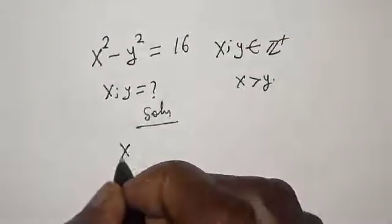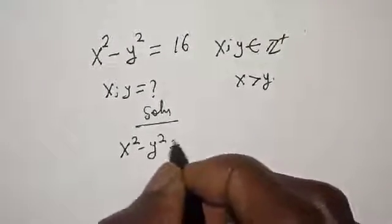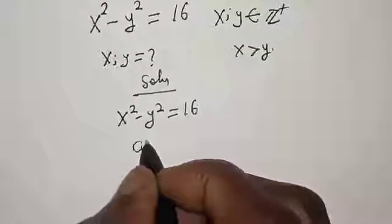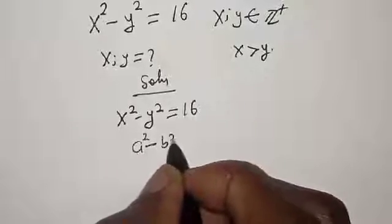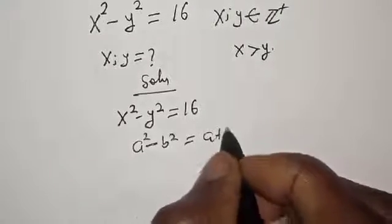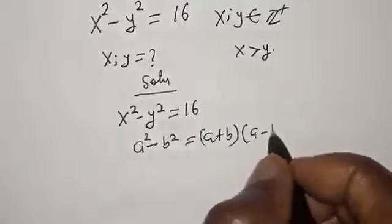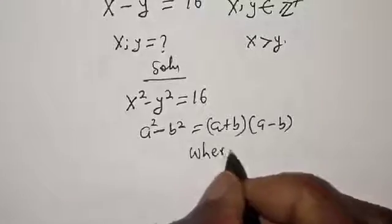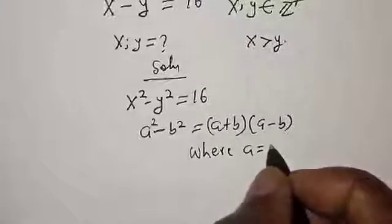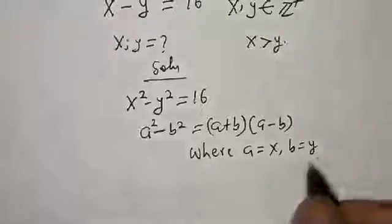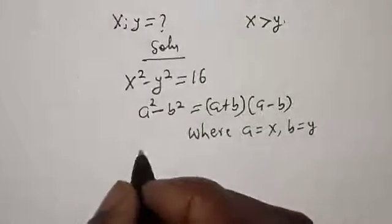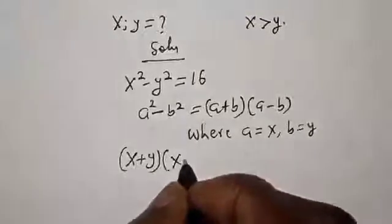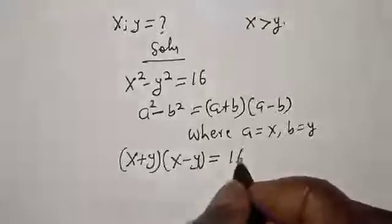We have x squared minus y squared is equal to 16. Take note of this exponential rule: a squared minus b squared is equal to (a + b)(a − b). Here, where a is equal to x and b is equal to y, this gives us (x + y)(x − y) is equal to 16.